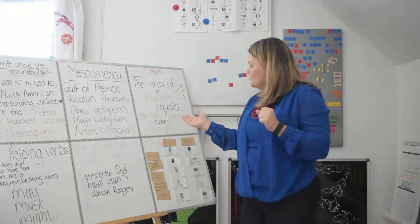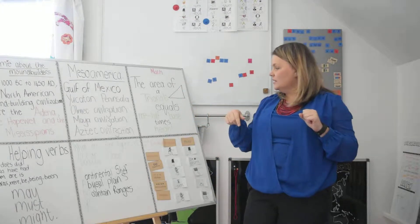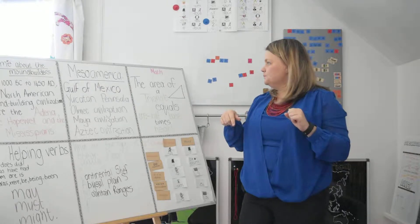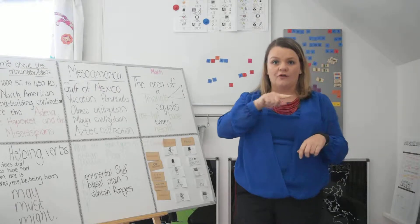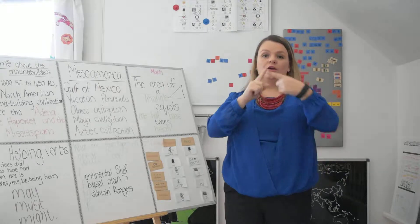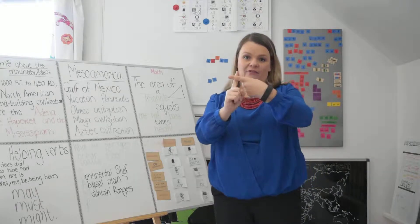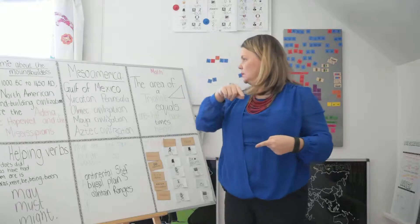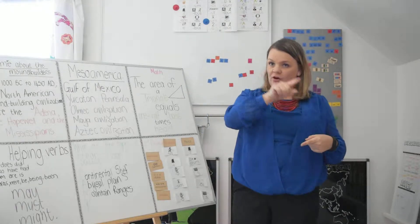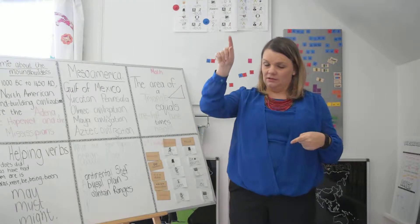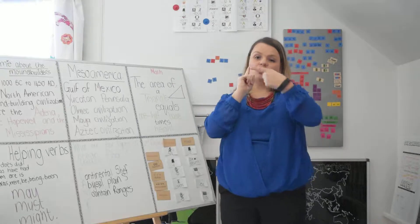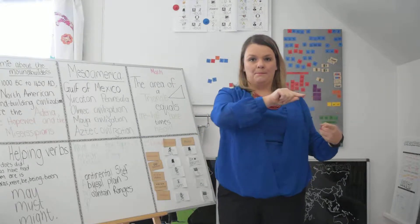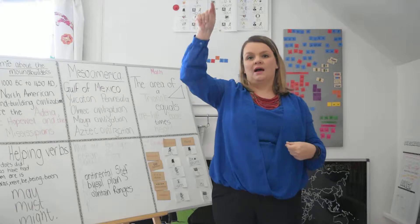Then we move on to math. The math is the area of a triangle, and we are going to say the area of a triangle equals one half base times height.